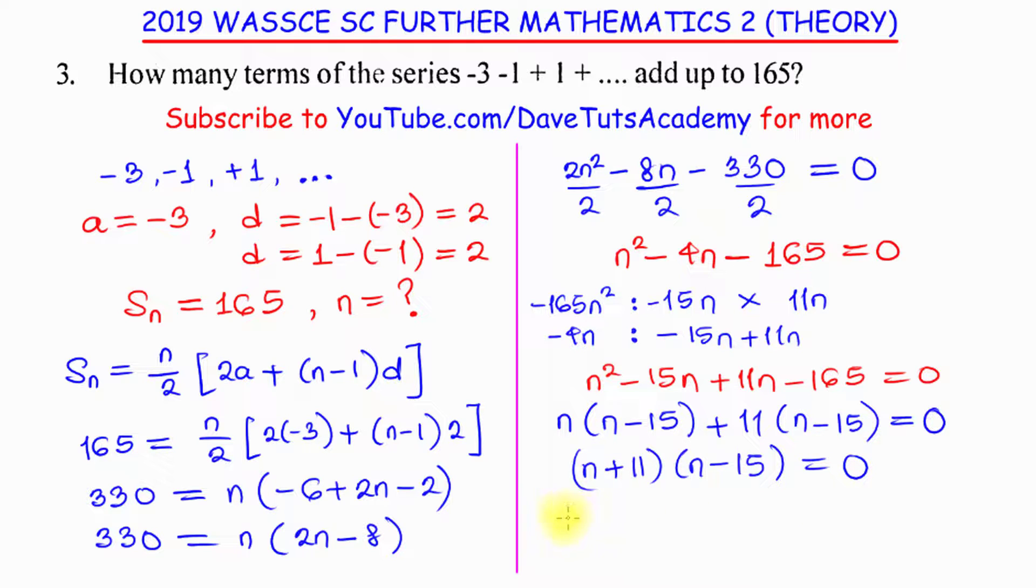So, taking these two is either n plus 11 is 0, or n minus 15 is 0. And looking at this, in this case, n is equal to minus 11, and here, n is equal to 15. But, we are looking for the number of terms. So, definitely, n equals minus 11 cannot be the correct answer because it's negative. The number of terms have to be an integer value starting from 0. So, it cannot be negative. So, our solution is that n is equal to 15.